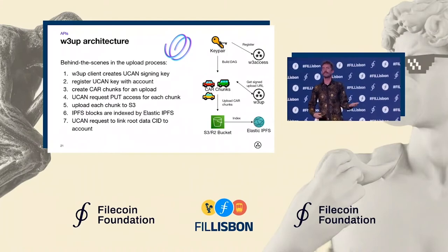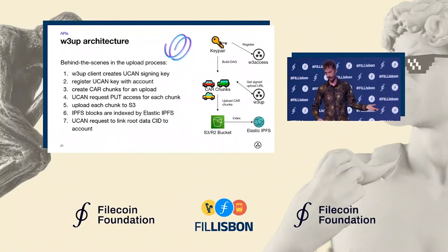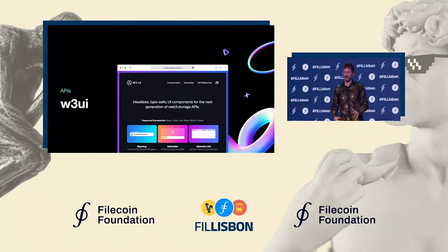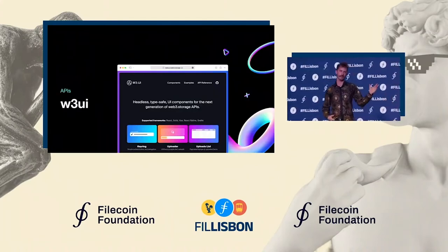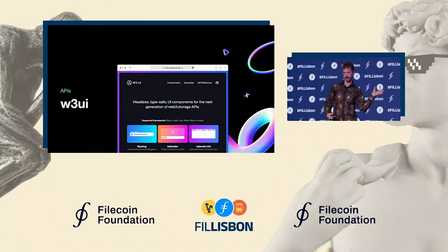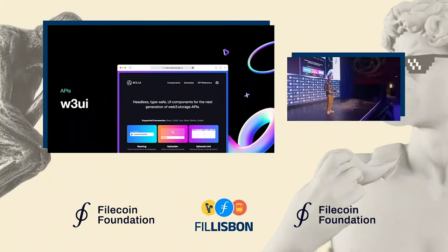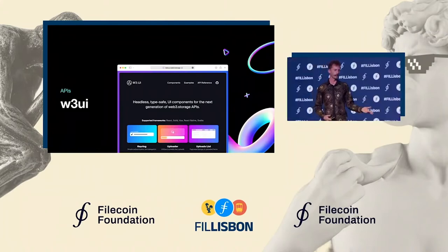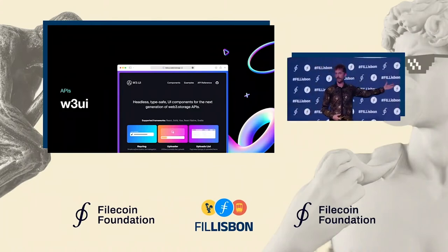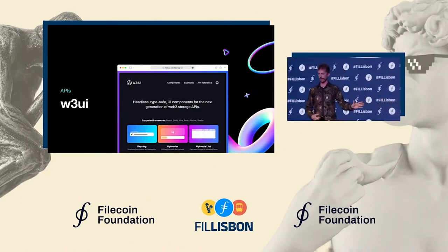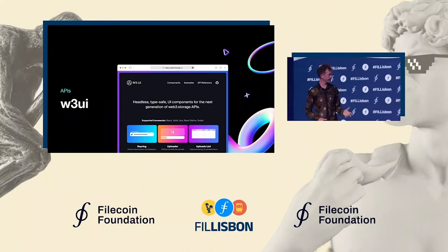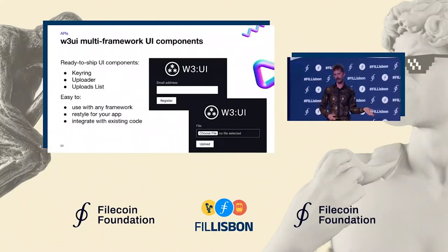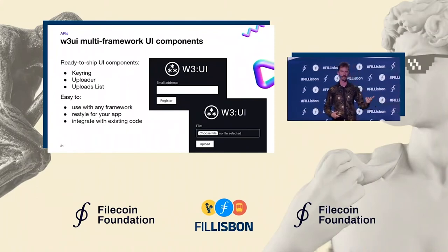We're the easiest way to get data onto the decentralized web, so we offer UI components that fresh-out-of-code-school developers can drop into their React, Svelte, Vue, or React Native apps and be ready to go. It's a headless and type-safe library, so we're not opinionated — you can use vanilla JS if you want. It's designed to give an out-of-the-box experience you can be proud of, while allowing you to upgrade to an even smoother end-user experience.